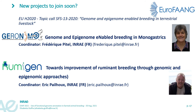We hope that new projects that started in 2021 will join EuroFANG soon. Two projects in particular answer topic SFS-14 for genome and epigenome-enabled breeding in terrestrial livestock. Geronimo, coordinated by Frédérique Pitel, targets both chicken and pigs for cosmopolitan and local breeds. The second, Rumigen, coordinated by Eric Pailhoux from INRAE, targets cattle with a specific interest in animal health and welfare traits.